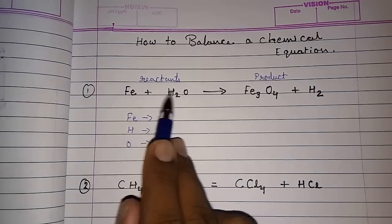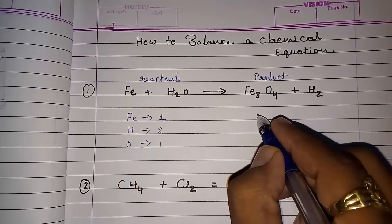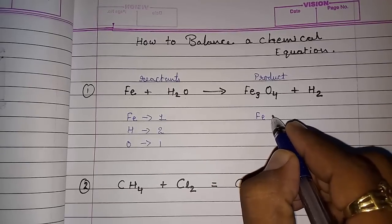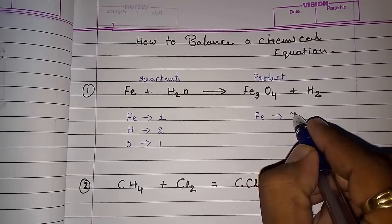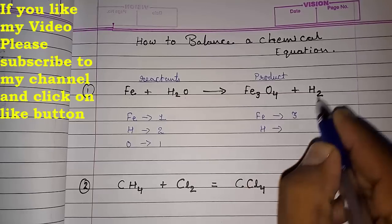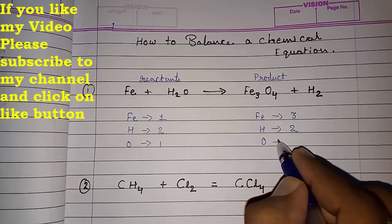So first we have to make the list of elements in reactant and then we have to make the list of atoms of different elements in the product. Fe, it's three. Hydrogen, that is two and oxygen, that is four.